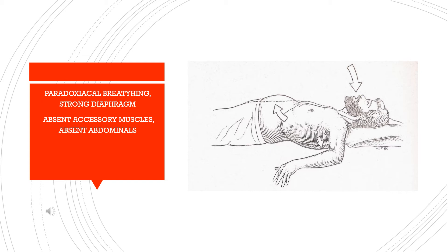In this figure you can see the first kind of paradoxical breathing, where strong diaphragmatic contraction is seen and there is absence of accessory muscles and abdominal muscles, and hence the upper chest collapses.